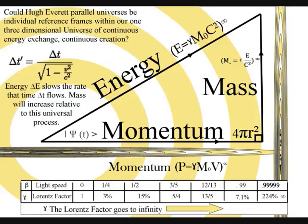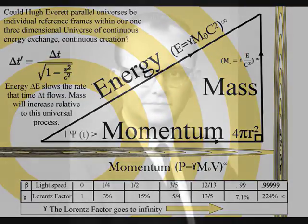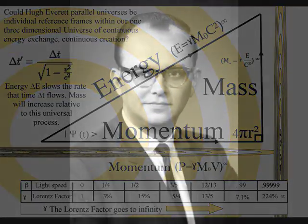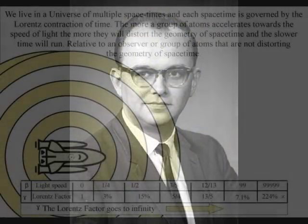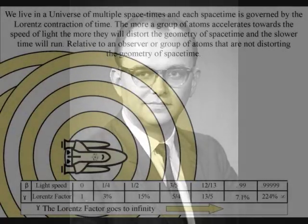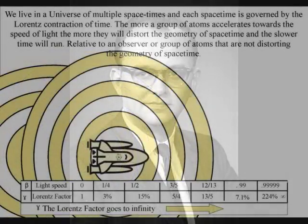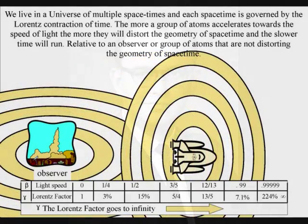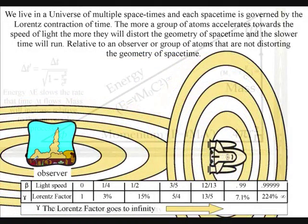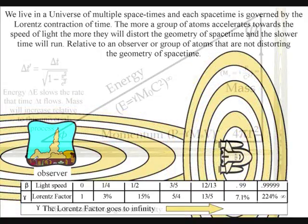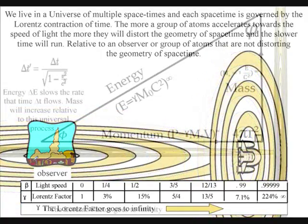The many worlds interpretation is one of the most logical ways of explaining the paradoxes of quantum physics. This interpretation is based on the mathematics of Hugh Everett. In his equations, each parallel world branches off at right angles to each other, similar to the branches of a tree. Therefore, we have an infinite number of parallel worlds or universes to our own universe, but forever cut off from it.